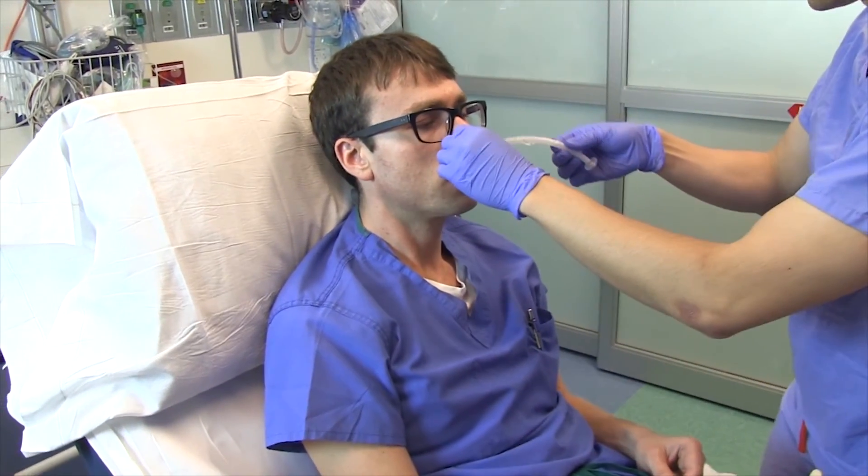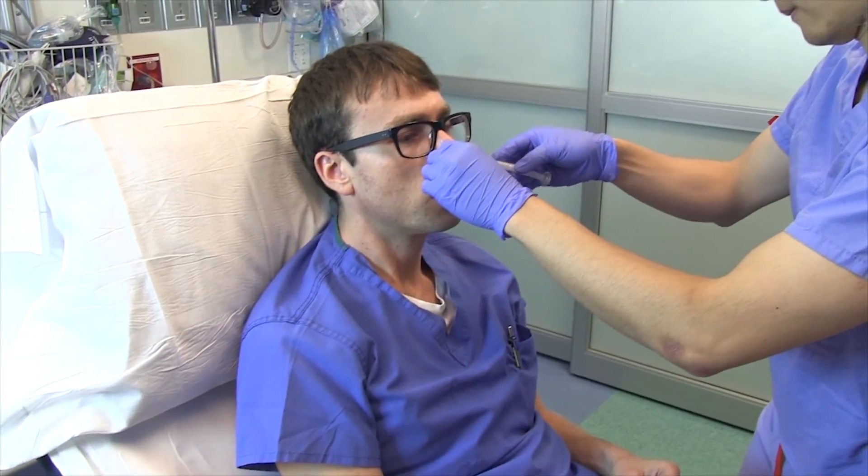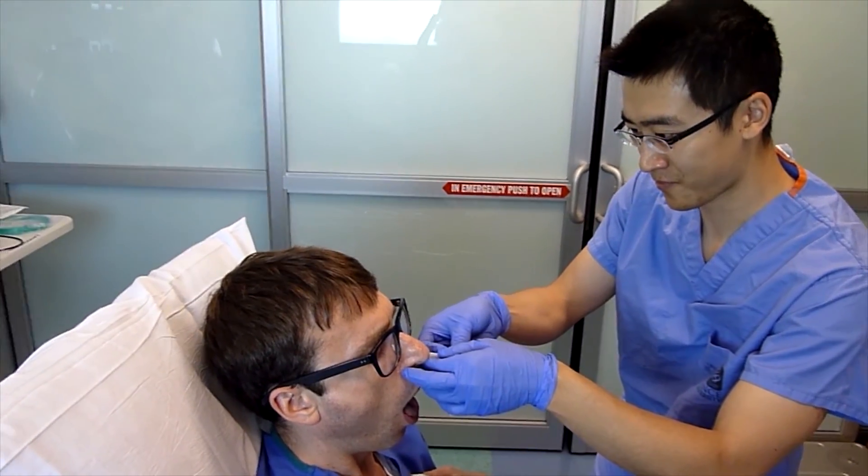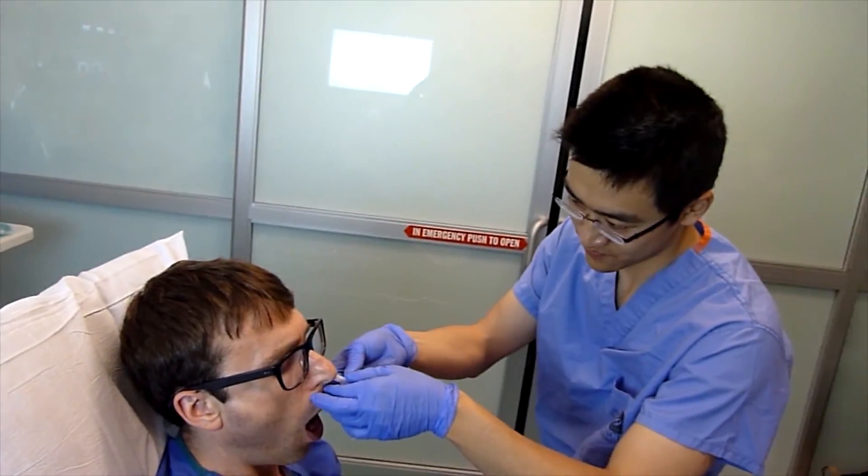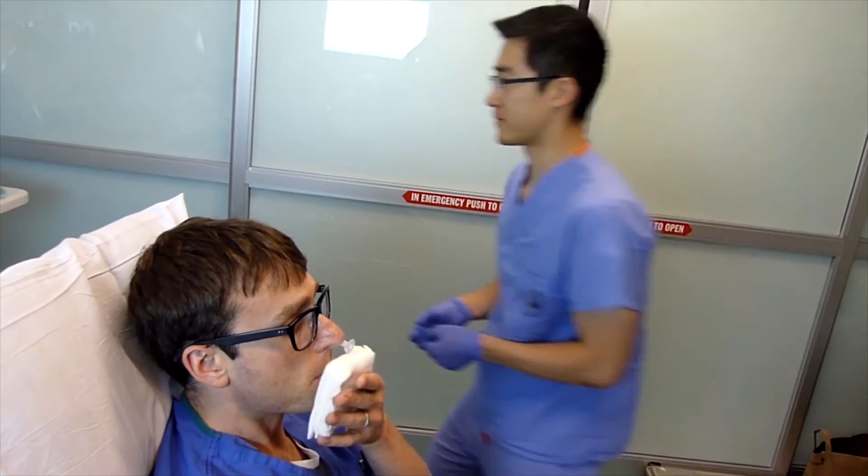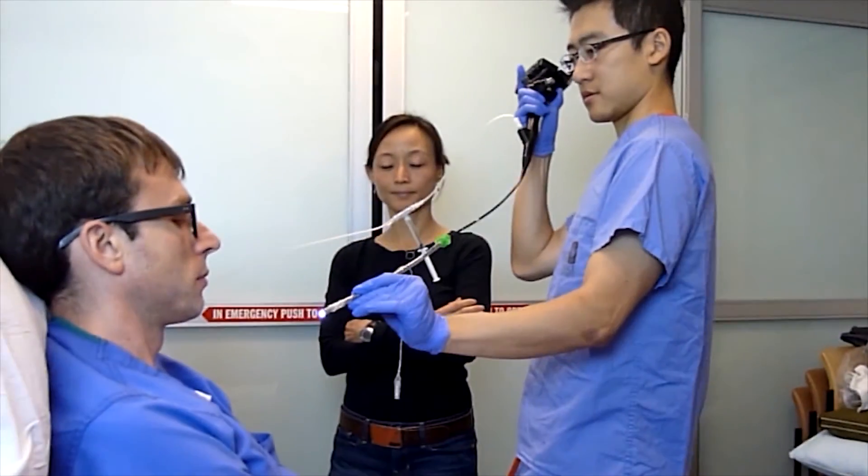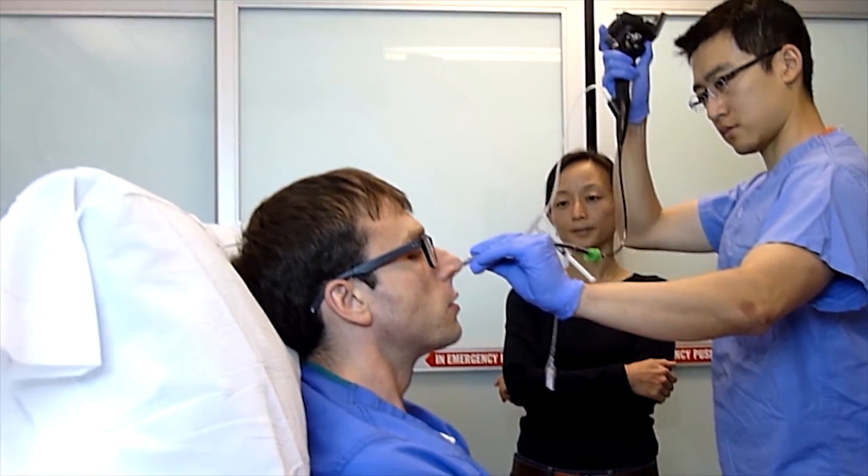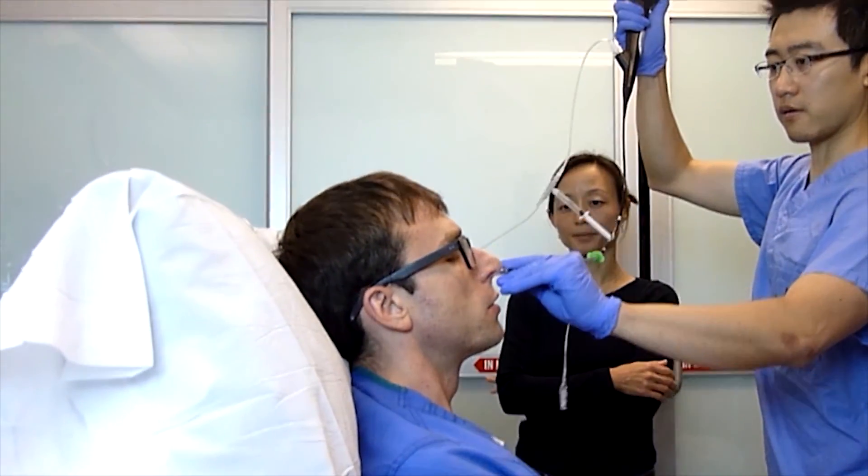I next place a 32 French nasopharyngeal airway. Its outer diameter is about the same as a 7-0 Parker endotracheal tube, but it's softer so it's better tolerated and dilates the nasal passages. Now we take the nasopharyngeal airway out, and I place the tip of the endotracheal tube into his nose. You can also tape the endotracheal tube to the hub of your scope.